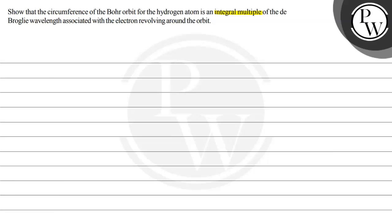So let's solve this question. There are two key concepts. One is Bohr's model and another one is de Broglie concept of atom.